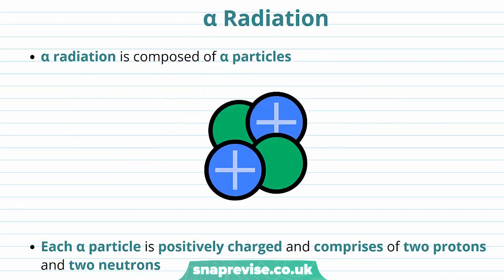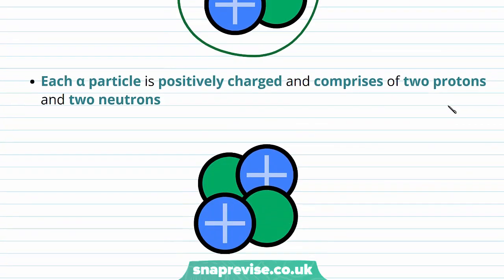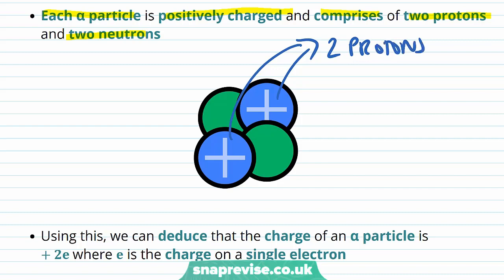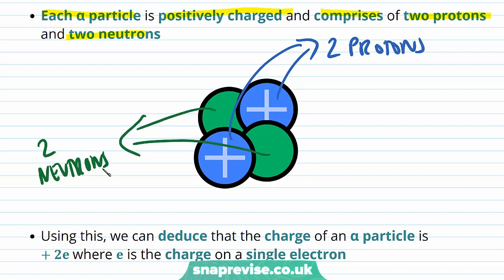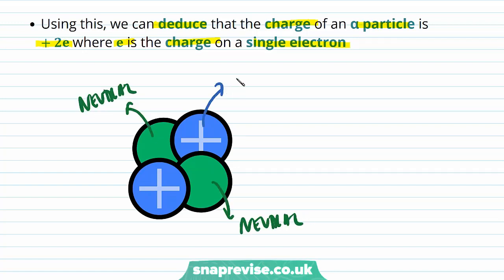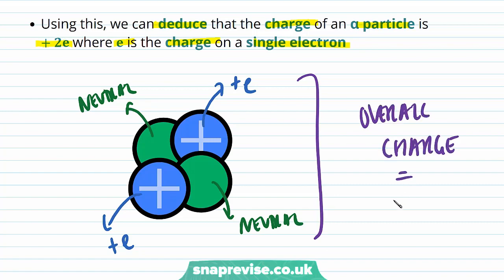Now we're going to go into a bit more detail about alpha radiation. Alpha radiation is composed of alpha particles. Each alpha particle is positively charged and comprises two protons and two neutrons. Using this, we can deduce that the charge of an alpha particle is plus 2e, where e is the charge on a single electron. We know that neutrons are neutral and that protons have a charge of plus e.